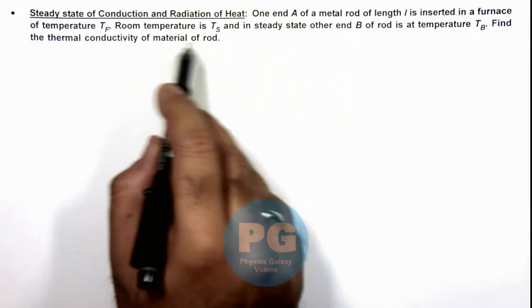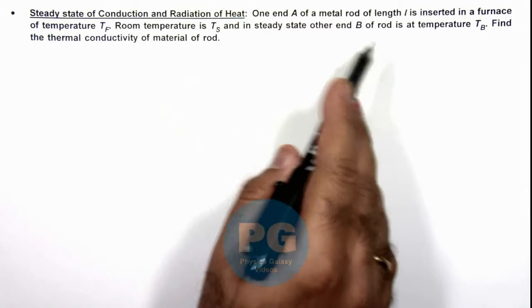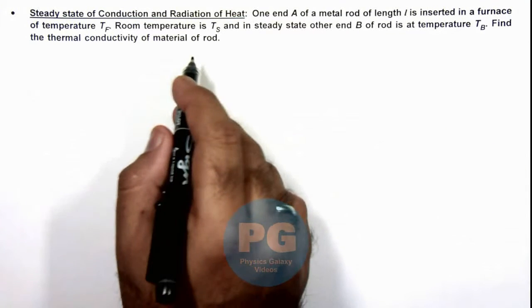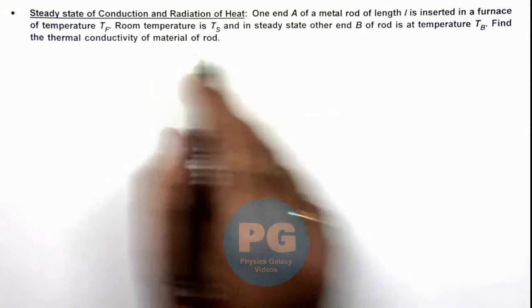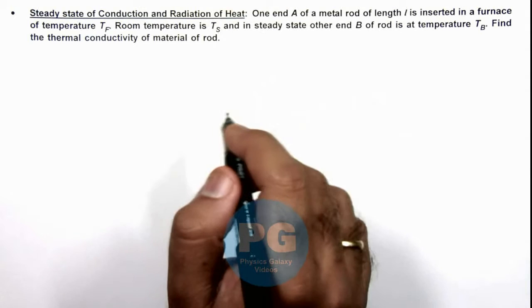The room temperature is T_s, and in steady state, the other end B of the rod is at temperature T_b. We are required to find the thermal conductivity of the material of the rod, considering all these temperatures are maintained at constant values.